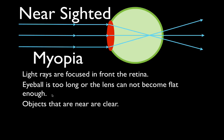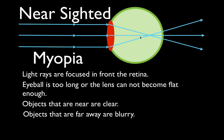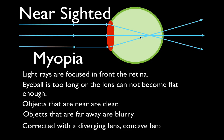With nearsightedness, objects that are near to you are clear, but objects that are far away are blurry. When you go to the doctor and they say you're nearsighted, they need to increase the focal length of your lens. To do that they give you diverging lenses, which are concave lenses. The same applies to contacts — they have a special shape so you can put them in your eye.